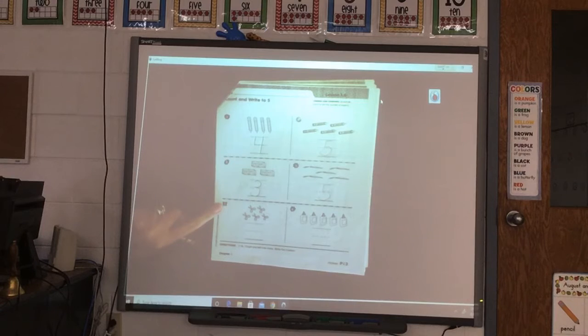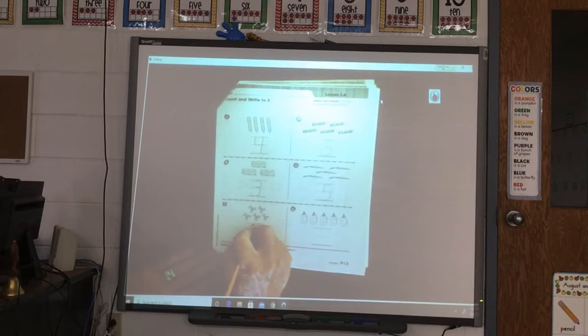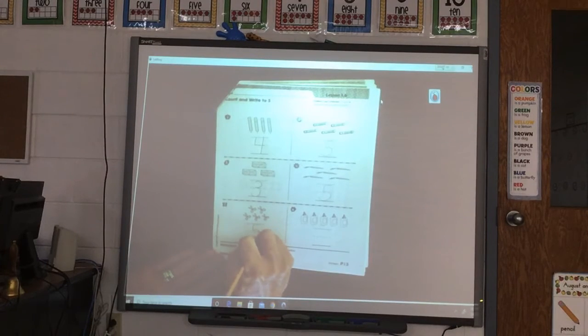Down here by the butterfly we are going to count some scissors. 1, 2, 3, 4, 5. So let's practice our 5 again. That's our new number. Make his hat, make his back, make 5's tummy, round and fat.